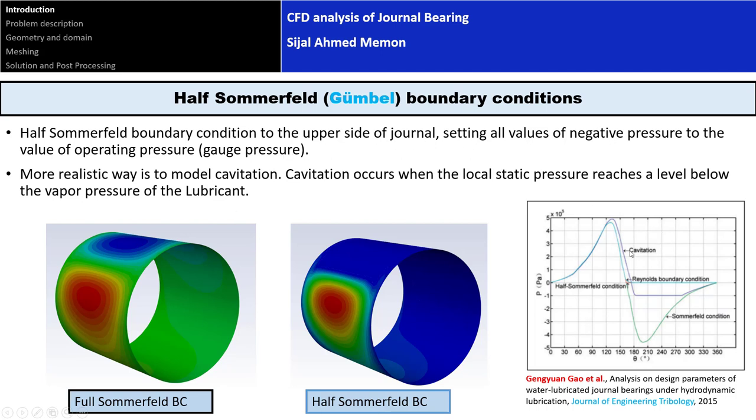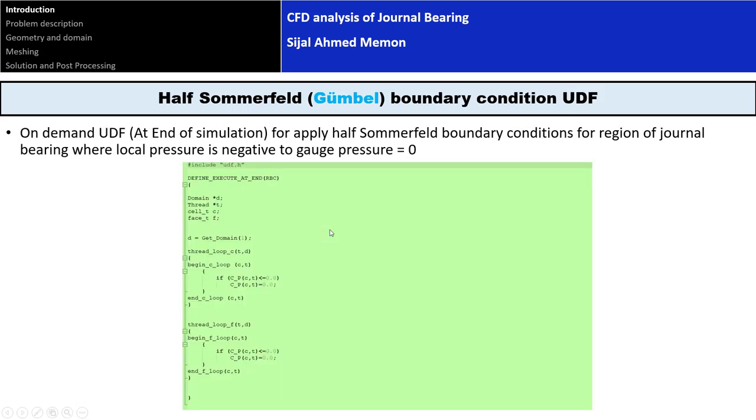This is the full Sommerfeld, this is the half Sommerfeld boundary condition and cavitation, and the corresponding application of these things in Fluent through UDF algorithm functions. You can see this is the function for applying the half Sommerfeld boundary condition through UDF in Fluent.